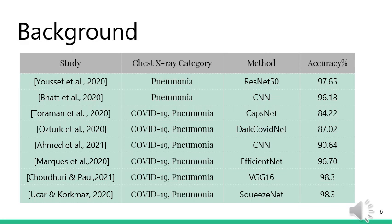A number of works have been done to address this problem. Some focus on identifying one of the diseases while others focus on identifying and differentiating both. These studies have employed widely used architectures like ResNet50, CapsNet, and EfficientNet, while some have also used convolutional neural networks built from scratch. Most of the work we have referred to have achieved considerably high accuracies.